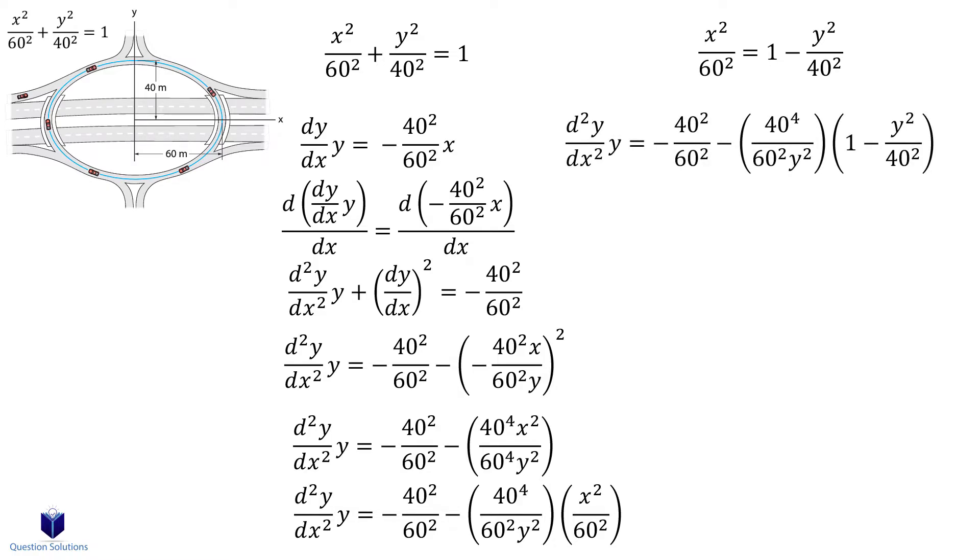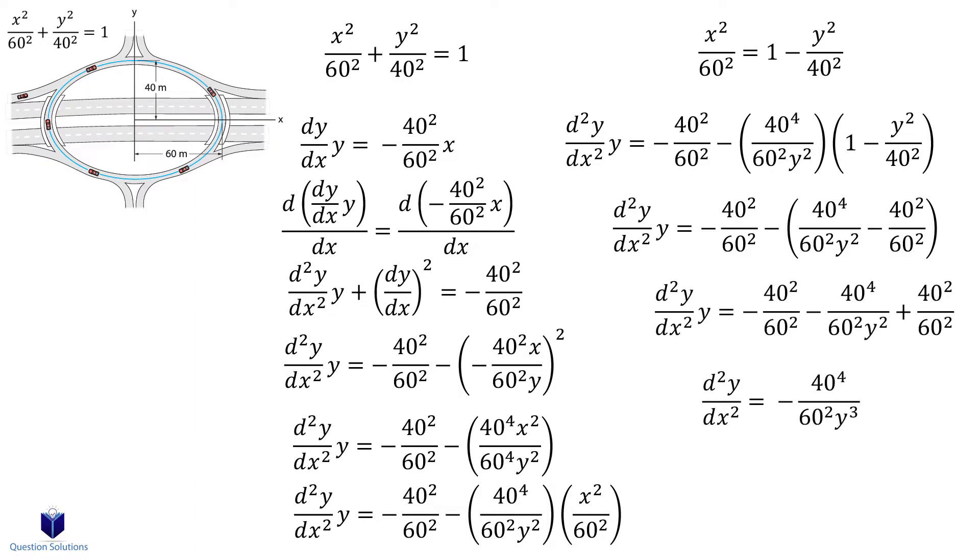Now let's multiply everything out to get rid of the brackets. Now we can multiply both sides by 1 over y. So that becomes our second derivative.